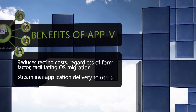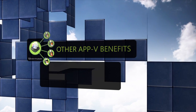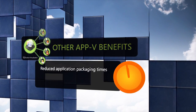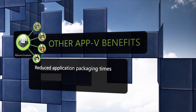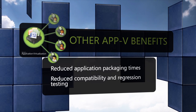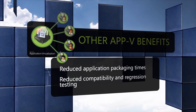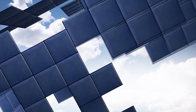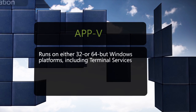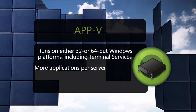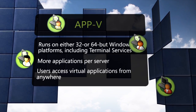Deploying Microsoft Application Virtualization can deliver many other immediate benefits to IT, including reduced application packaging times to a fraction of the time typically needed to create Windows installer packages, and reduced compatibility and regression testing by providing isolation that prevents application-to-application conflicts. AppV runs on either 32- or 64-bit Windows platforms, including terminal services, enabling more applications per server and allowing users to access their virtual applications from anywhere.